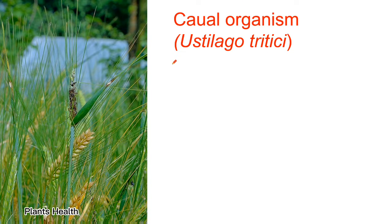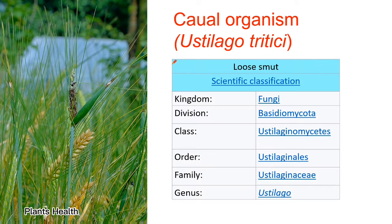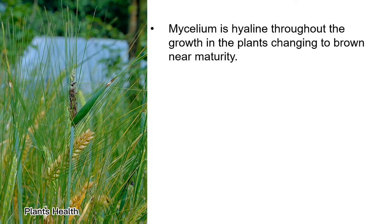Causal organism: Ustilago. Kingdom Fungi, Division Basidiomycota, Class Ustilaginomycetes, Order Ustilaginales, Family Ustilaginaceae, and Genus Ustilago. This is the scientific classification of the causal organism.